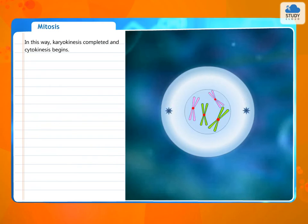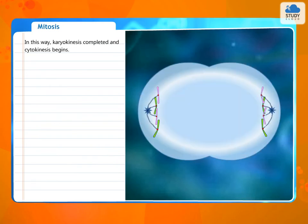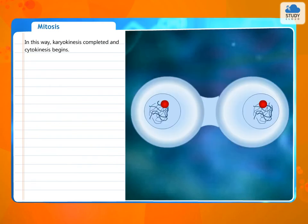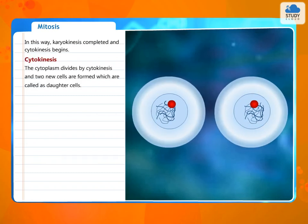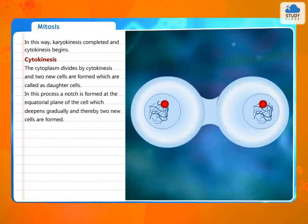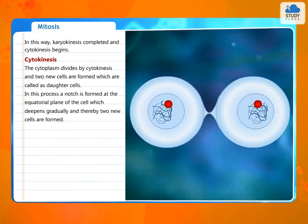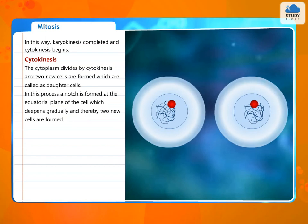In this way, karyokinesis completes and cytokinesis begins. The cytoplasm divides by cytokinesis and two new cells are formed which are called daughter cells. In this process, a notch is formed at the equatorial plane of the cell which deepens gradually and thereby two new cells are formed.